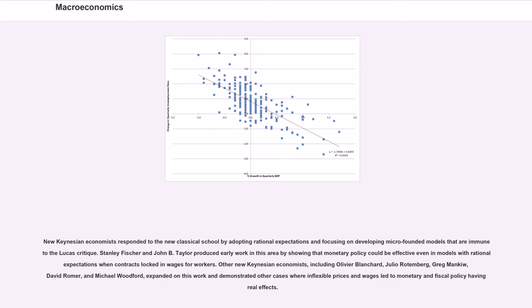Other New Keynesian economists, including Olivier Blanchard, Julio Rotemberg, Greg Mankiw, David Romer, and Michael Woodford, expanded on this work and demonstrated other cases where inflexible prices and wages led to monetary and fiscal policy having real effects.